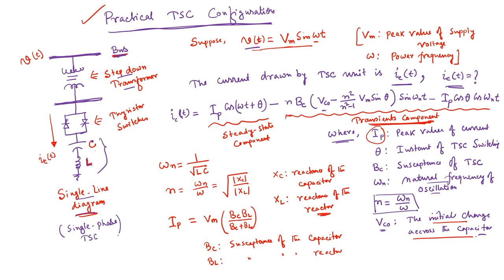We will discuss the three-phase TSC, but before that, we will discuss some practical problems in operating this TSC. One problem already discussed in the last lecture is that when this TSC unit is brought into service, the current drawn by this capacitor consists of two terms: one is the steady-state component, and another is the transient component. The transient component makes the initial current during turn-on very high.